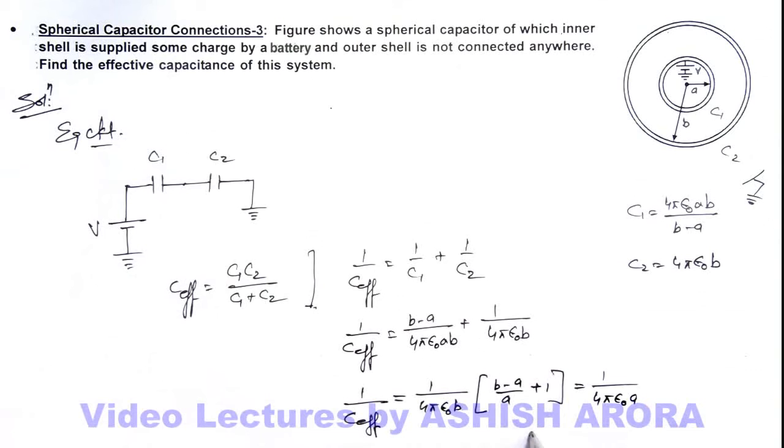So the value of C effective here we are getting is 4π epsilon not a. That is the answer to this problem.